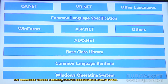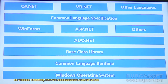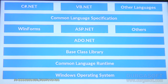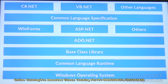On top of ADO .NET we have WinForms, ASP .NET, and others. WinForms means Windows Forms application development, done mainly via the System.Windows.Forms and System.Drawing namespaces. ASP .NET is mainly meant for web application development using the System.Web namespace. Others refers to additional new frameworks introduced in .NET, such as WPF and WCF, which we'll discuss in detail later.